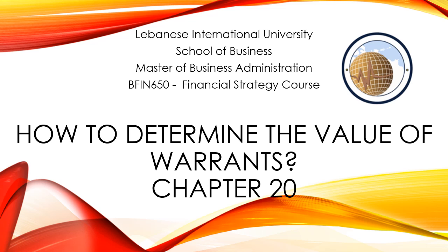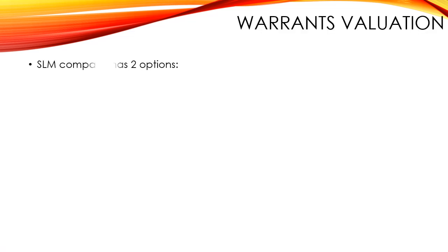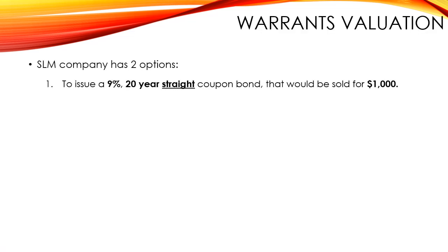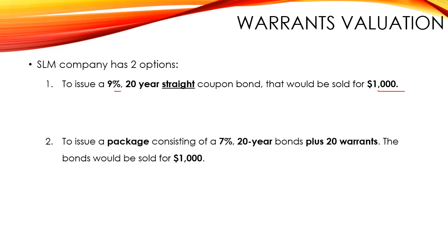Hello, everyone. In this video, we are going to show you how to determine the value of warrants. SLM company has two options: either to issue a 9% 20-year straight coupon bond that would be sold for $1,000 at par, or to issue a package consisting of a 7% 20-year bond plus 20 warrants. The bonds would be sold for $1,000. Determine the value of the warrant.